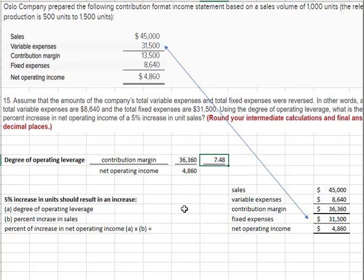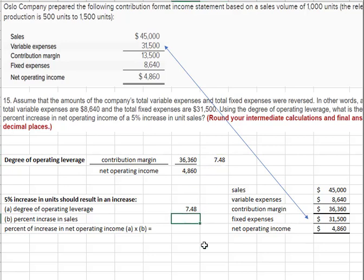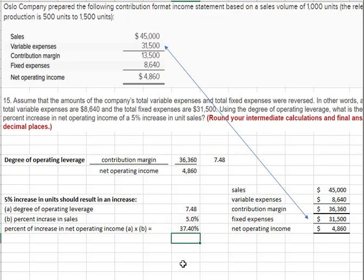Now we're going to use it. The degree of operating leverage is multiplied times the percent change in sales, and that will tell you the percent change in net operating income. So the percent change in net operating income would be your operating leverage times how much sales changed. That's a pretty impressive shift, and that's because when sales went up, fixed costs did not.